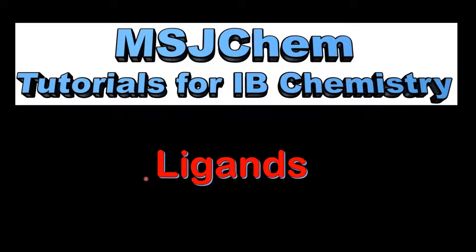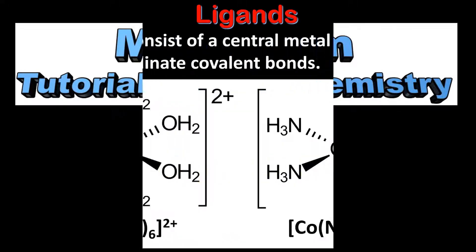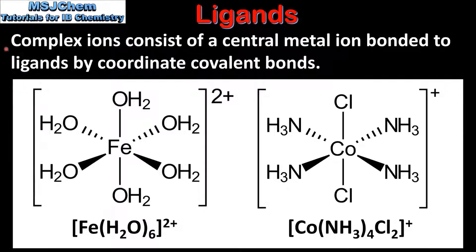This is MSJChem. In this video I'll be looking at ligands. We'll start with a quick review of complex ions. Complex ions consist of a central metal ion bonded to ligands by coordinate covalent bonds.